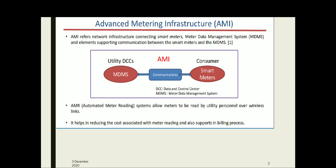AMR, which we already discussed in the last module, or Automatic Meter Reading systems, is also part of AMI. It allows meters to be read by utility personnel or wireless links without any manual intervention. This helps in reducing cost associated with meter reading and also supports the billing process. There is also a large amount of data that can be stored in a meter data management system for further analysis.